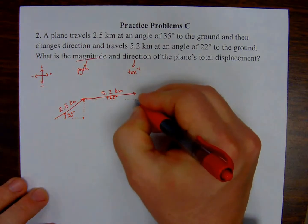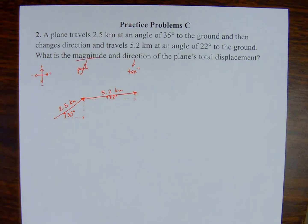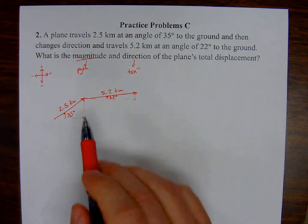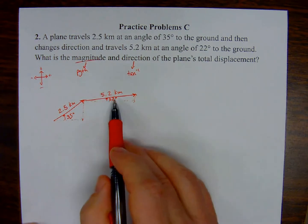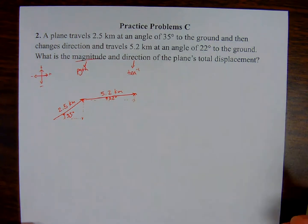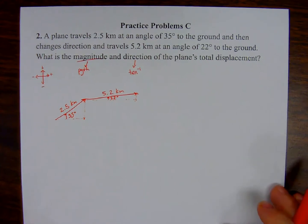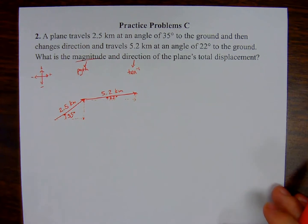You can see that I actually have two different triangles. I'm going to take triangle number 1 and decompose it into its x and y components, and triangle number 2 and decompose it into its x and y components. Then I'll be able to add both x components together and both y components together. Once I've done that, I'll have a total x displacement and a total y displacement, and I'll be able to draw one large right triangle.